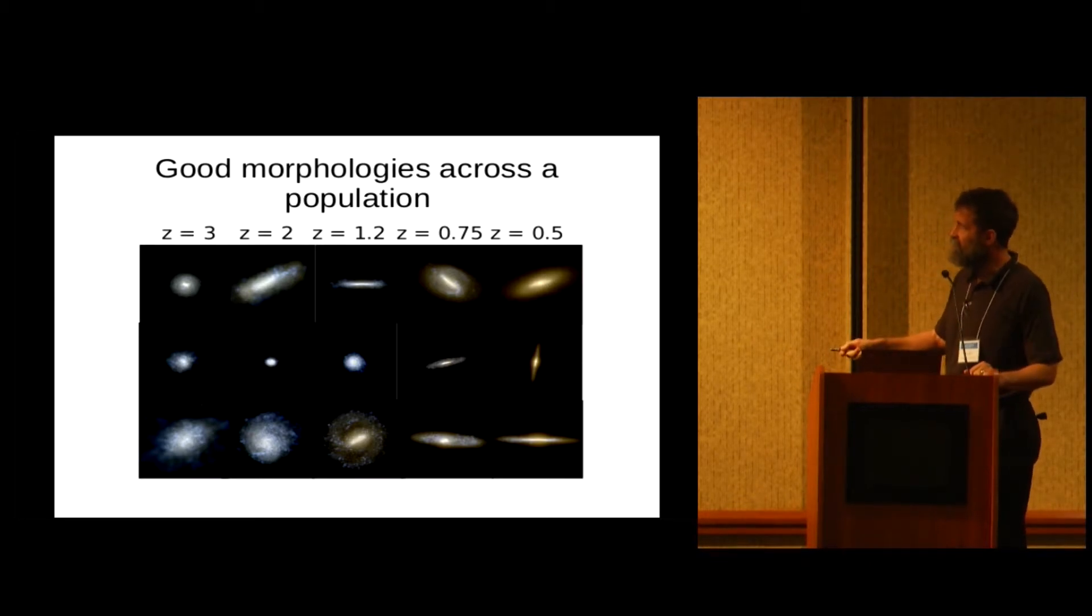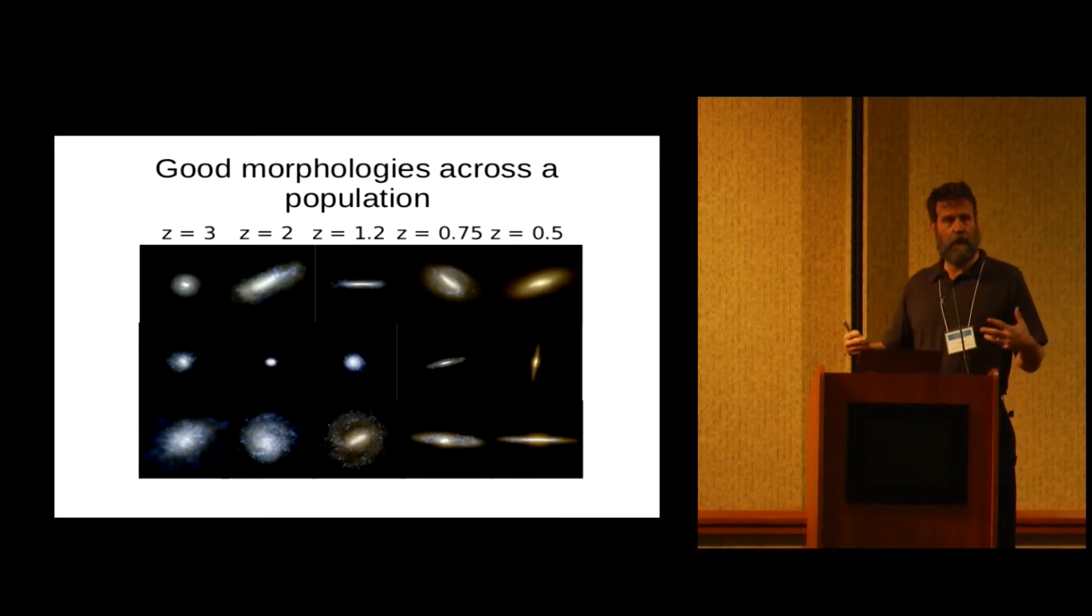More importantly, we get good morphologies over a range of masses and time scales. We get some galaxies that are star-forming early on. Later on, we get galaxies that are quenched. The star formation has petered out.